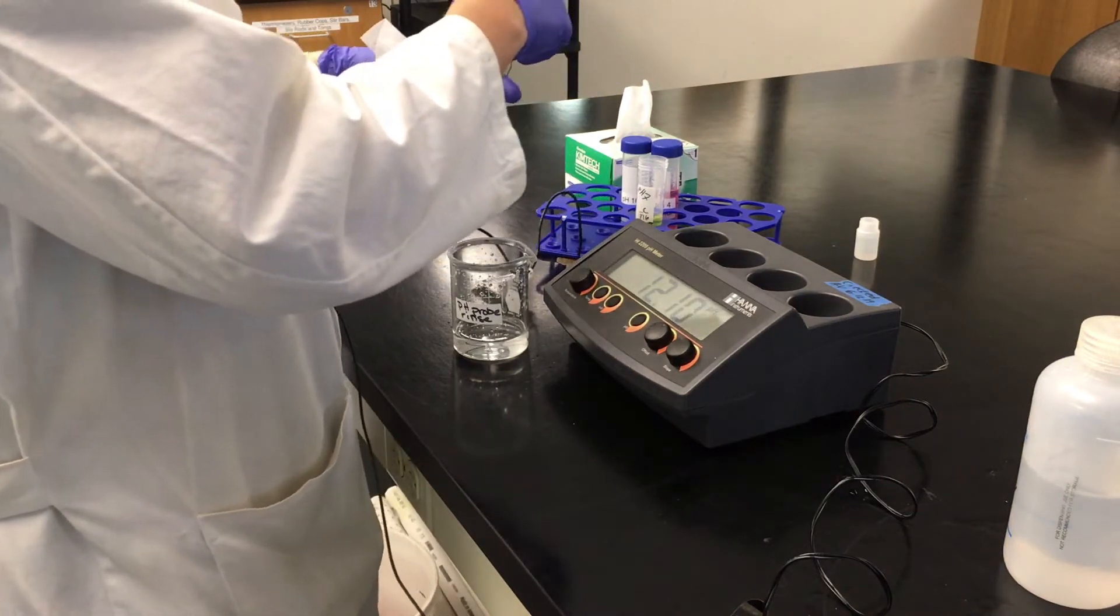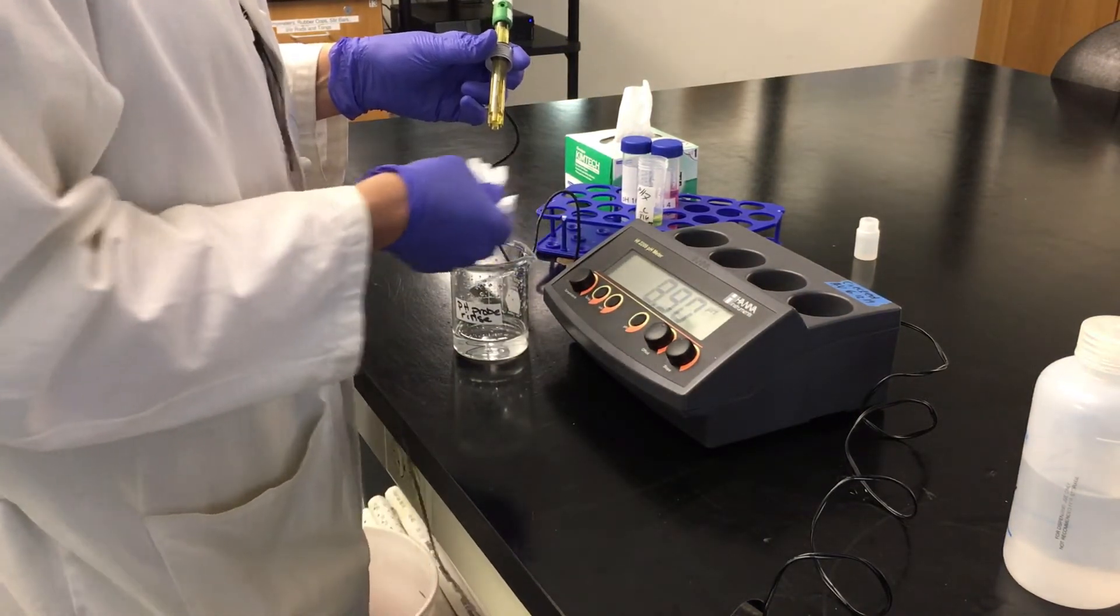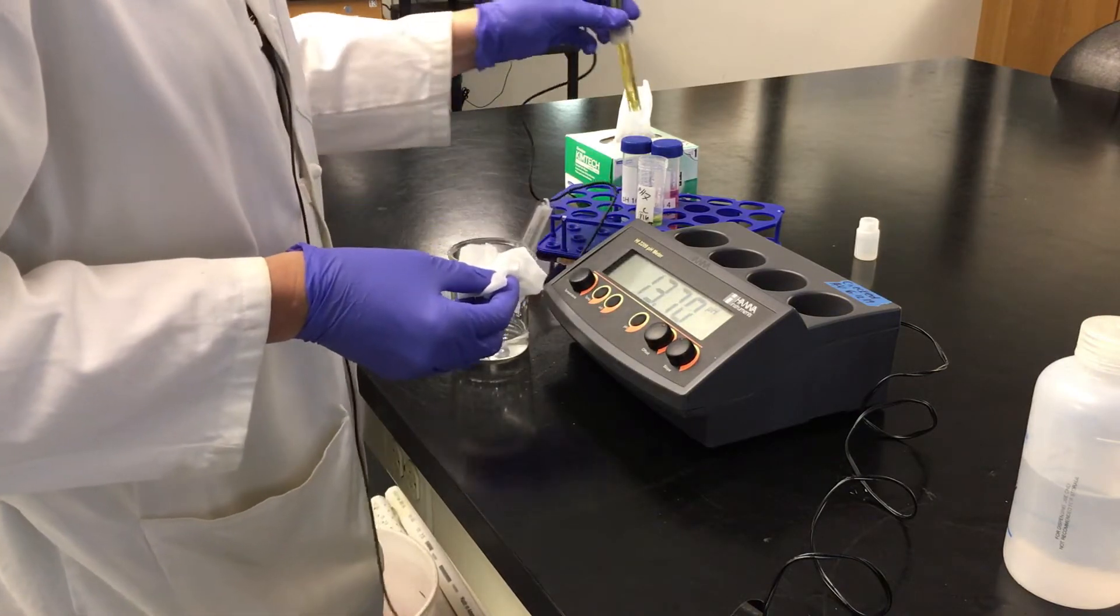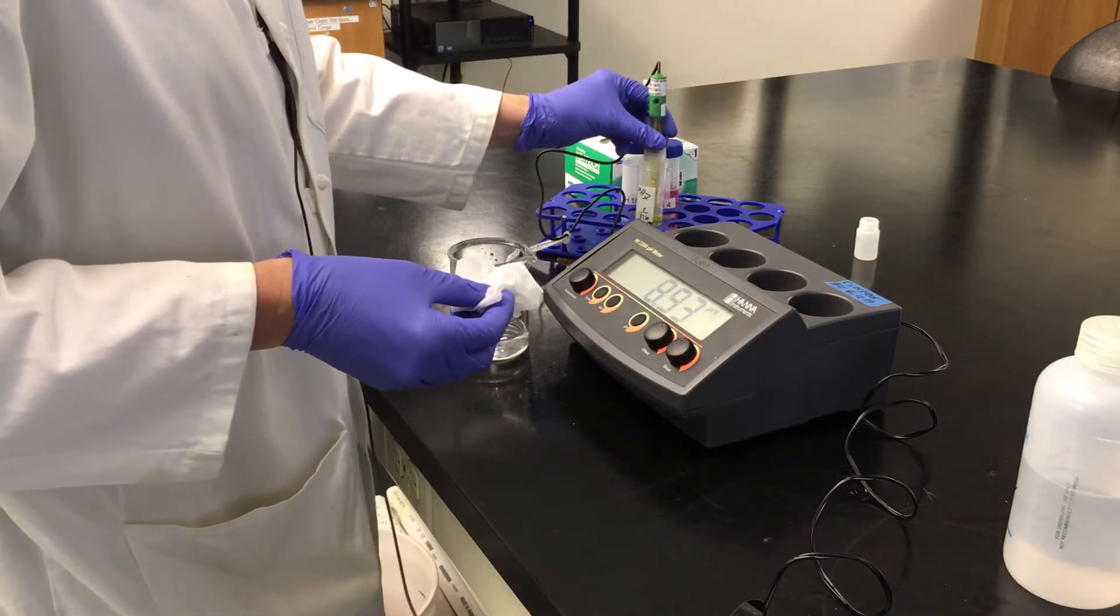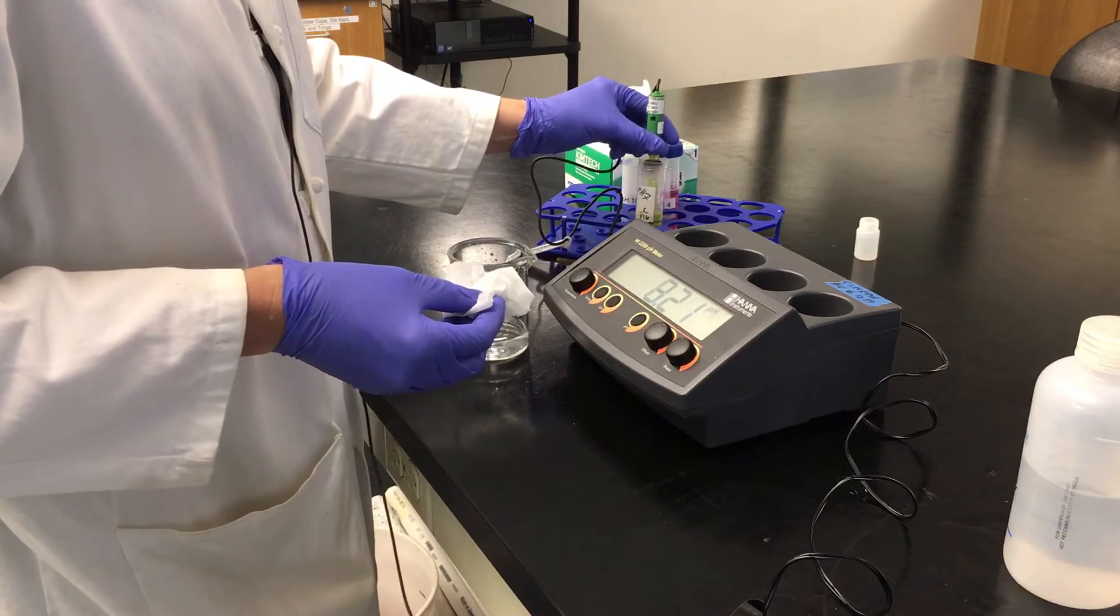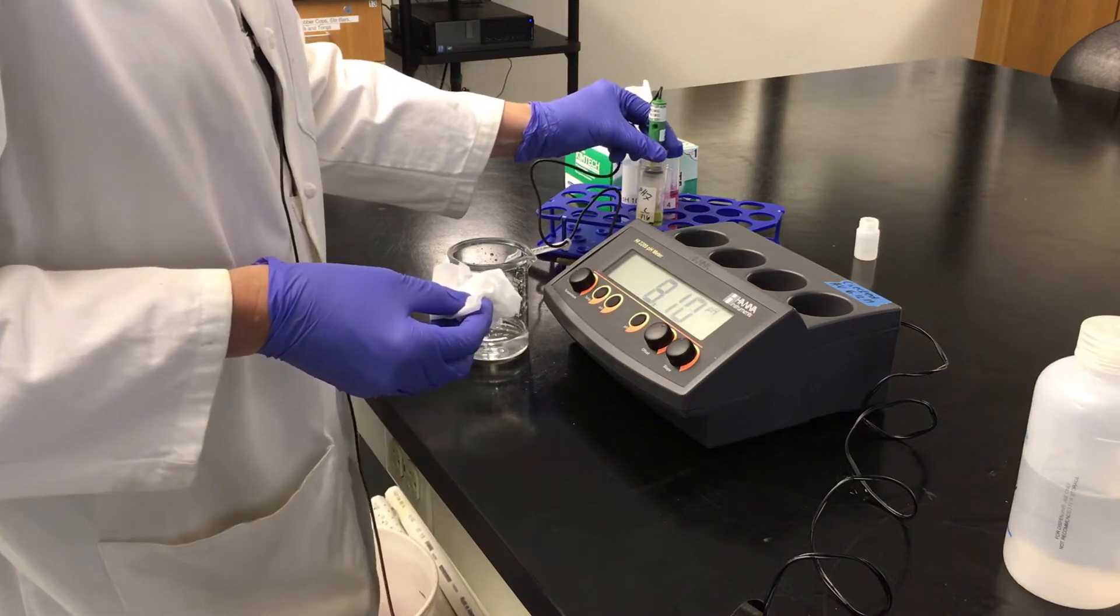We're not going to try to fully dry that bulb, it will damage it, so we're just going to dab it, and then place it, making sure that the junction is fully submerged into the pH 7.